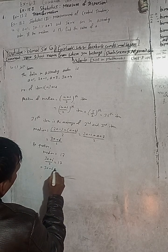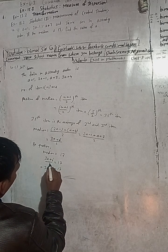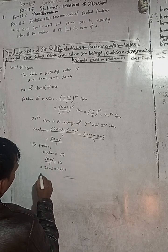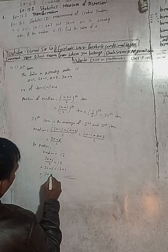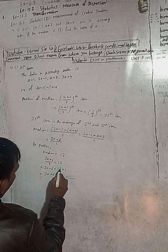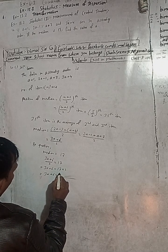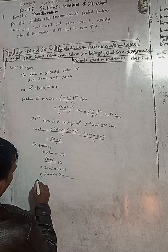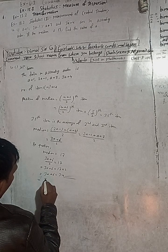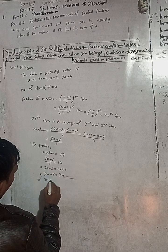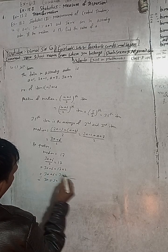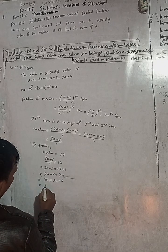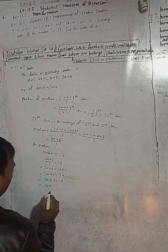Multiplying both sides by 2: 3a + 6 = 34. Then 3a = 34 − 6 = 28.